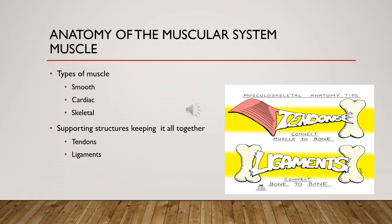We have three different types of muscles: smooth muscle, cardiac muscle, and skeletal muscle. Skeletal muscles are striated voluntary muscles controlled by the central and peripheral nervous system. They are held in place by connective tissues, and the entire muscle is surrounded by fascia — a covering that does not have a lot of give. Tendons hold muscle to bone, and ligaments attach bone to bone.